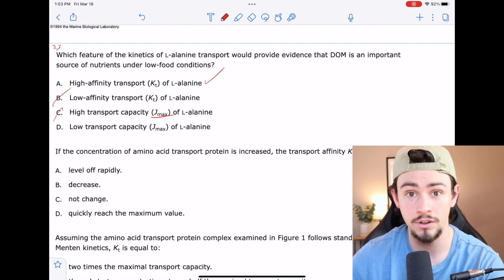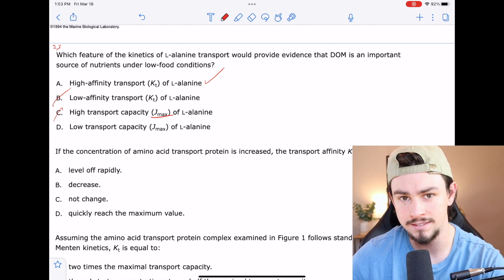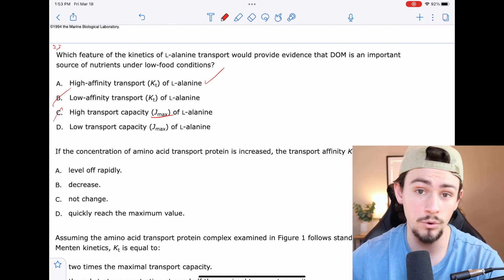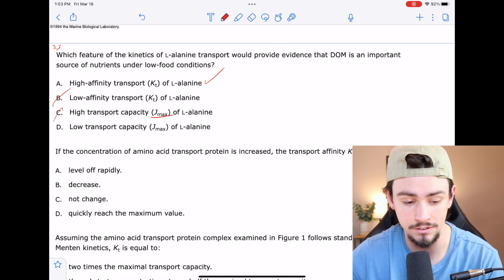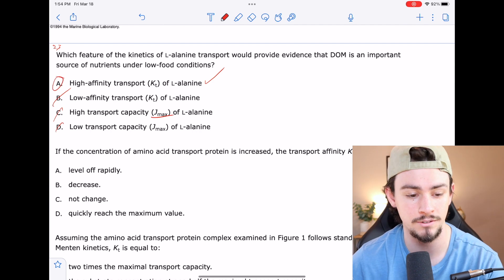And then D says a low transport capacity. I don't like D either because lowering the total amount that we can possibly hold doesn't help us retain what we've got either. So maybe not D. That leaves A to be the correct answer.